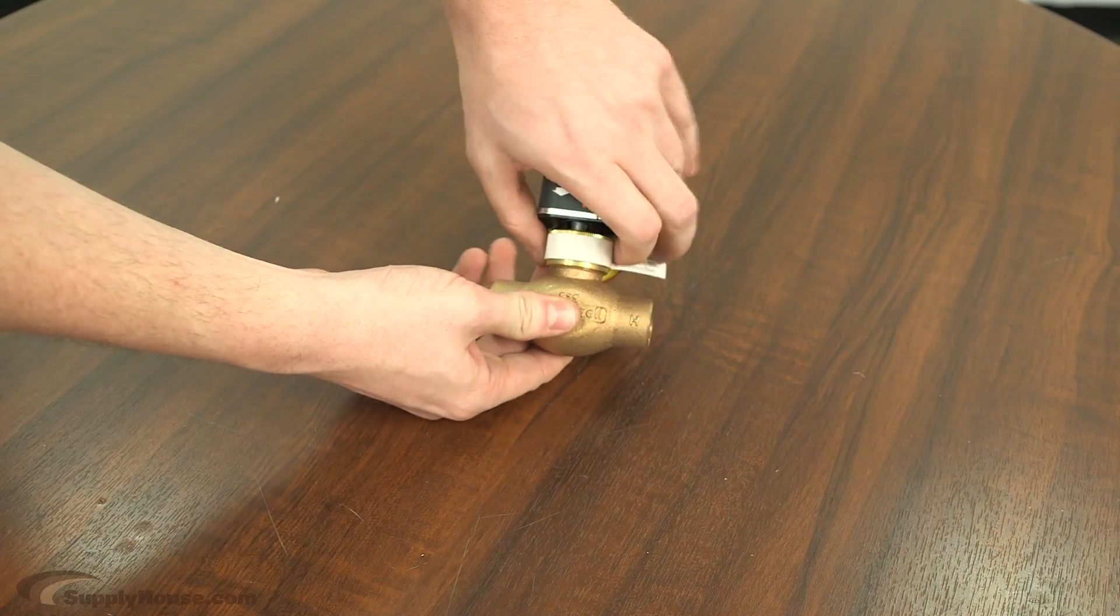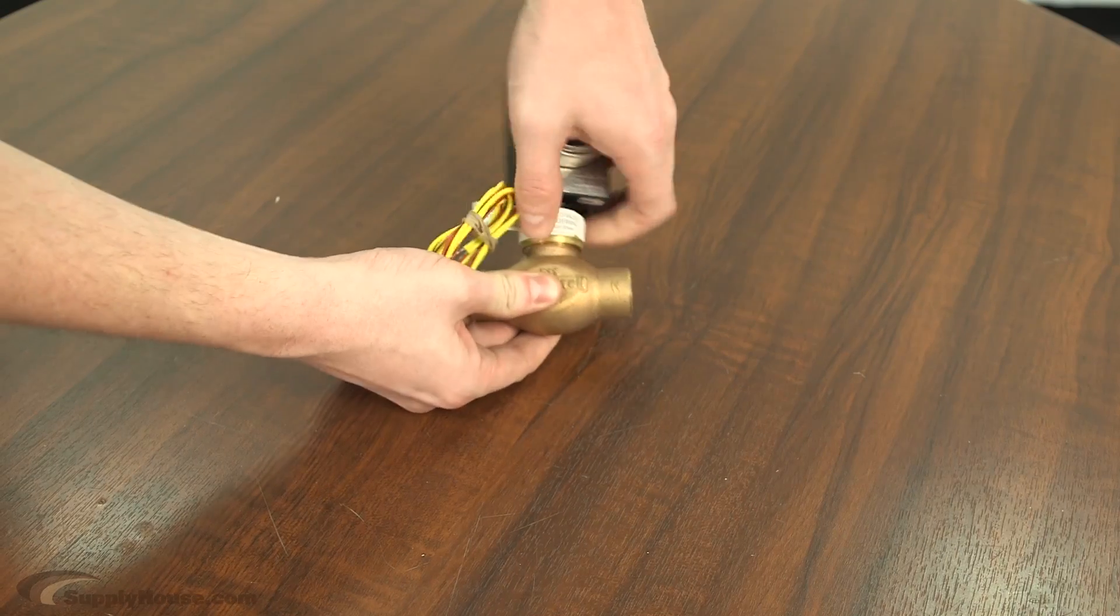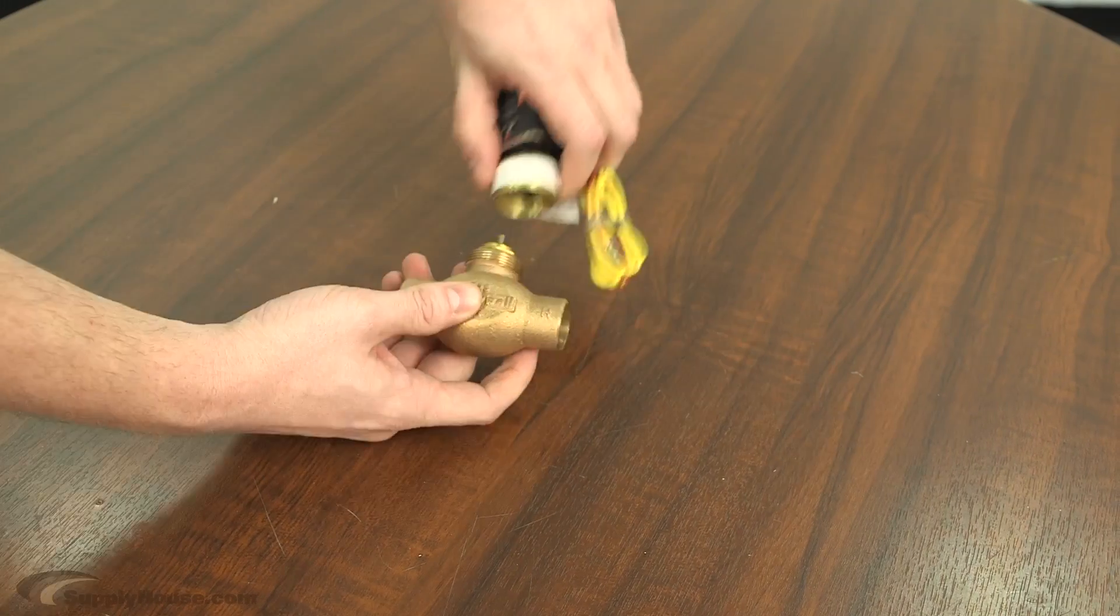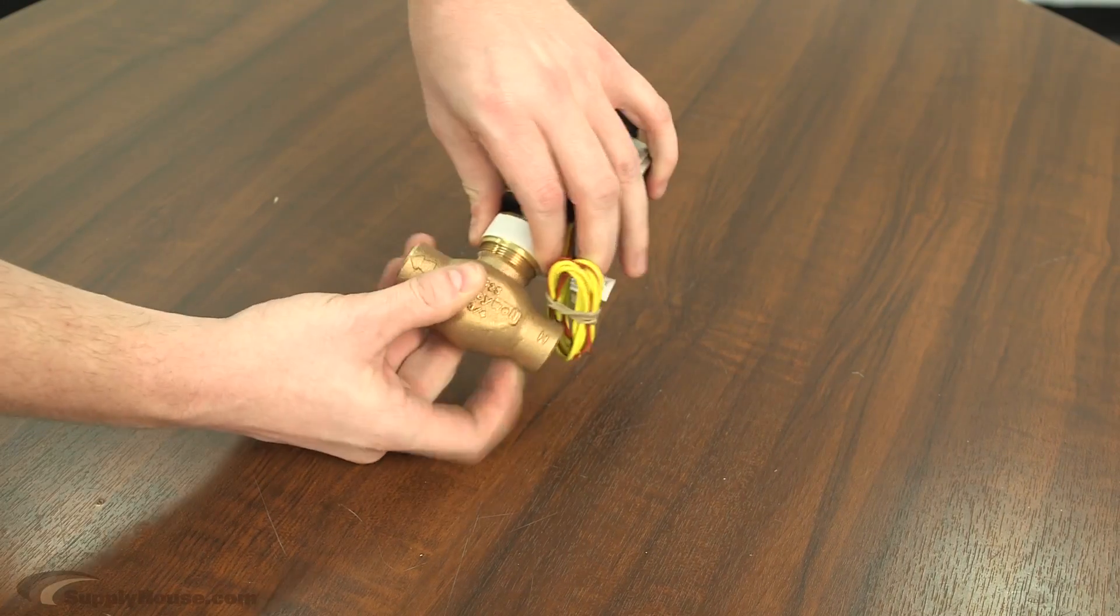Here we have the Honeywell MZV valves. These are pretty easy, too. All you have to do is unscrew the nut here, and the actuator will come off. Grab the new one, screw it back on, rewire it.